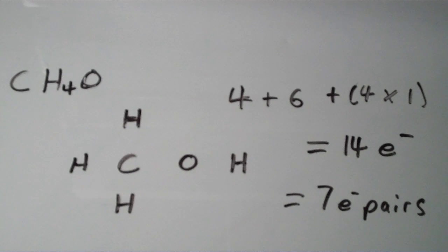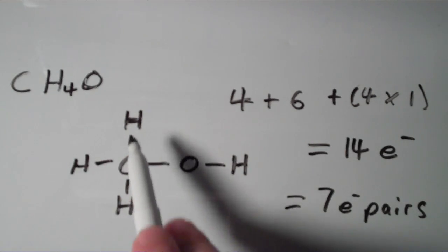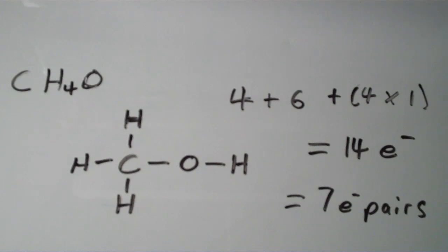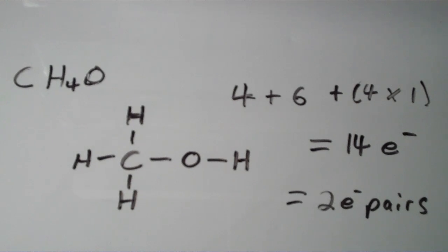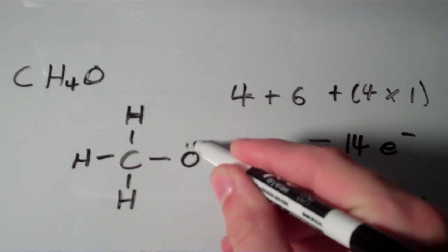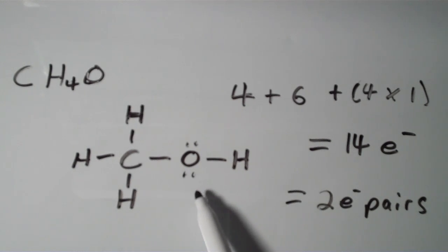Now we have to distribute the electrons. The first thing we do is add two electrons between every two atoms. In doing so, we've used up five of our electron pairs, so now we're down to two. We have to add these two electron pairs to atoms to try to get octets for everything. Notice that the carbon already has an octet and all of the hydrogens have a duet, so the only place the lone pairs can go is on the oxygen. Adding both lone pairs to the oxygen gives an octet to oxygen as well. This is the correct Lewis structure for CH4O.